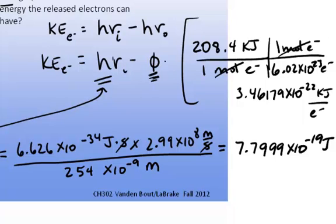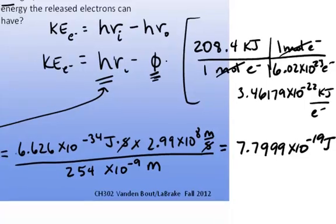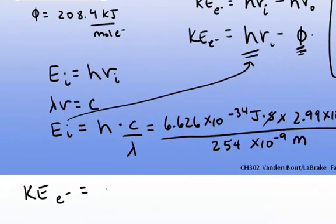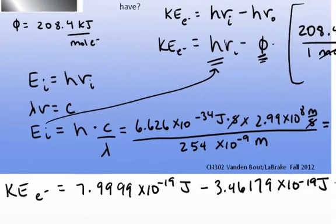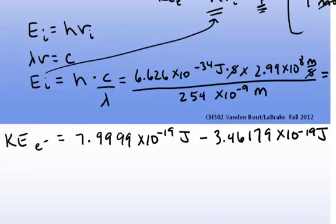To calculate the kinetic energy of the ejected electron, it's going to be the energy of the incident radiation — 7.9999 × 10⁻¹⁹ joules — minus the work function or threshold energy. Since we're subtracting, the numbers have to be in the same units, so we multiply by 1,000 to convert kilojoules to joules, giving 3.46179 × 10⁻¹⁹ joules.